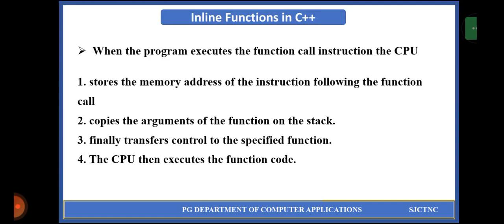What is function call overhead? How can we reduce the function call overhead? When the program executes the function call instruction, the CPU follows certain steps. There are four different steps that will be executed while performing normal functions. If it is a smaller function, executing all these steps will be a waste of time.